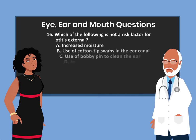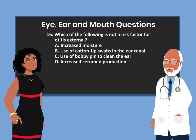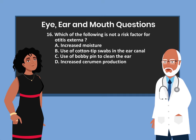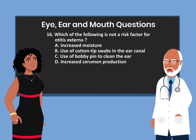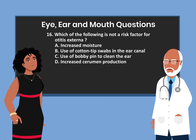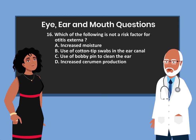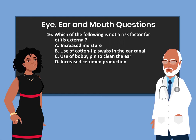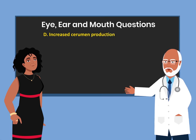Question 16. Which of the following is not a risk factor for otitis externa? A. Increased moisture. B. Use of cotton tip swab in the ear canal. C. Use of bobby pin to clean the ear. D. Increased cerumen production. The answer is D.